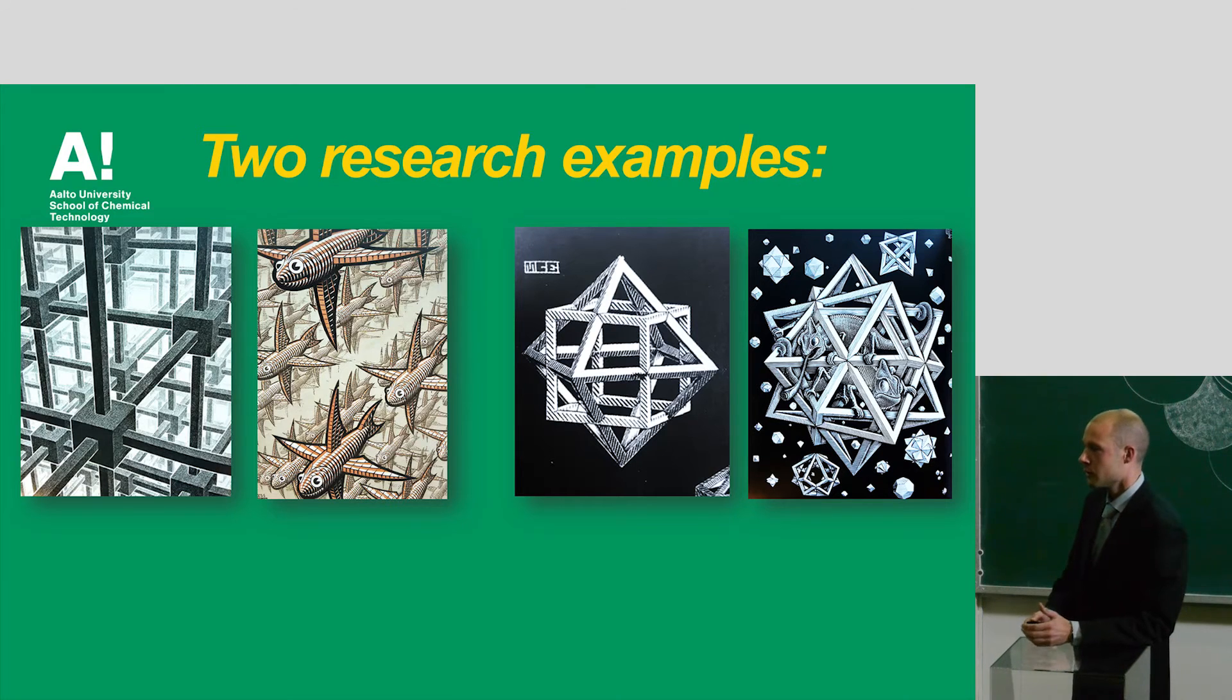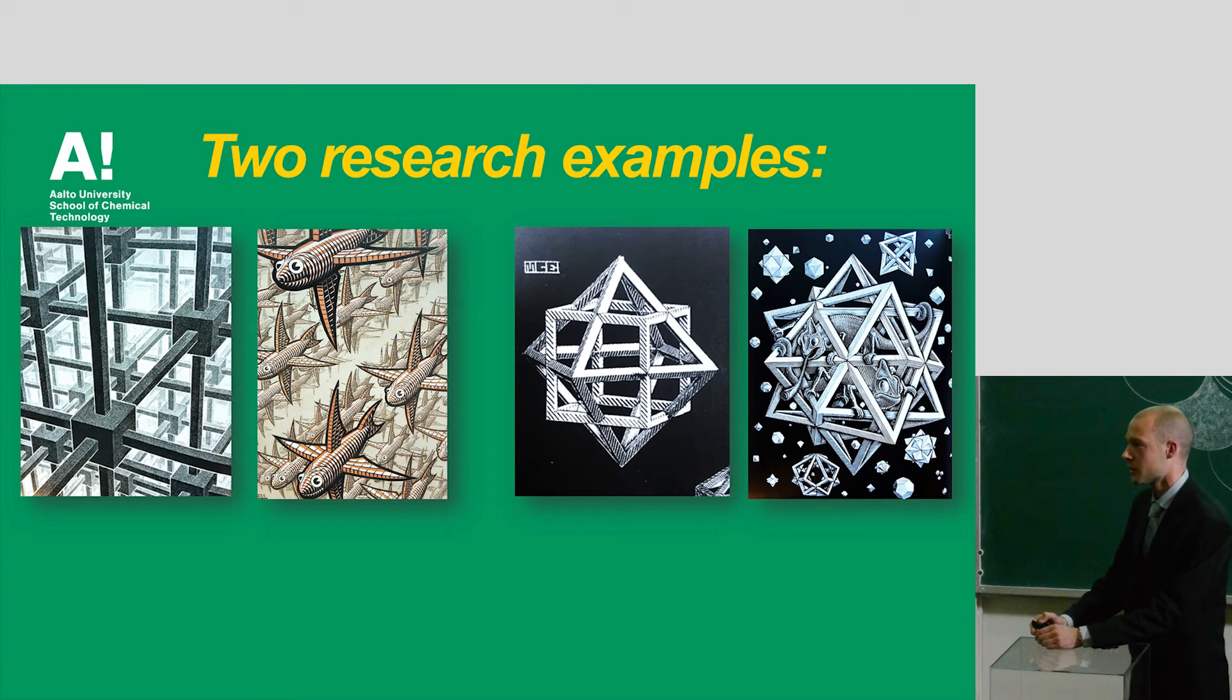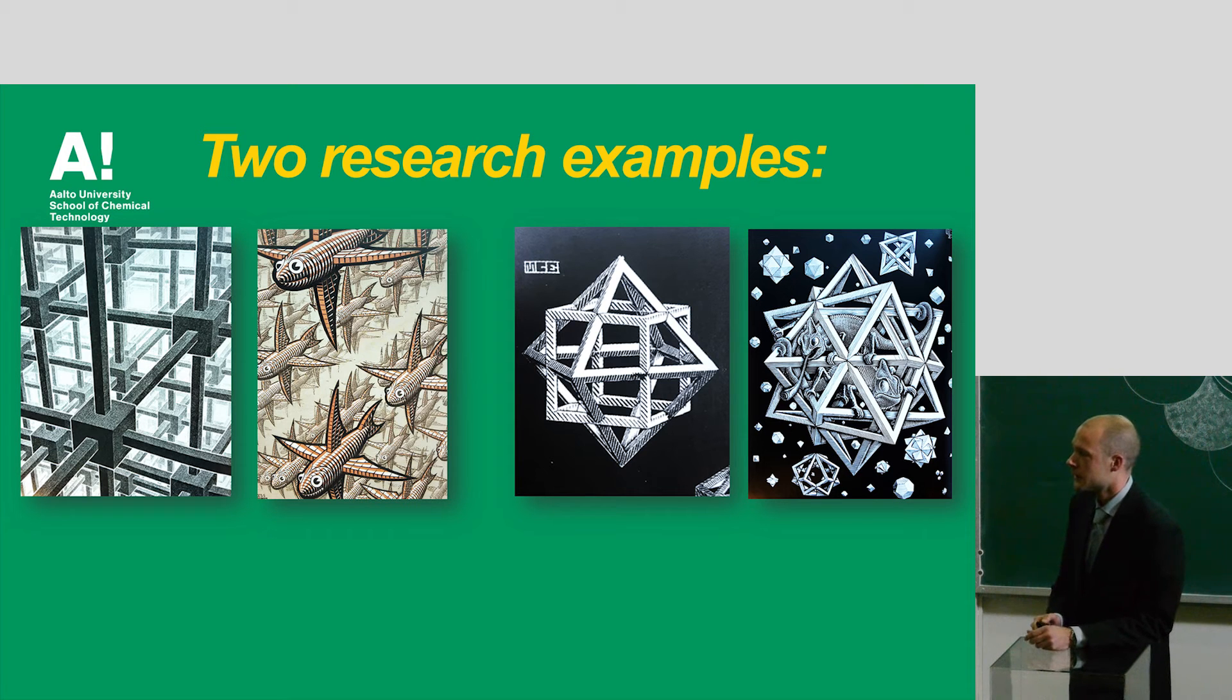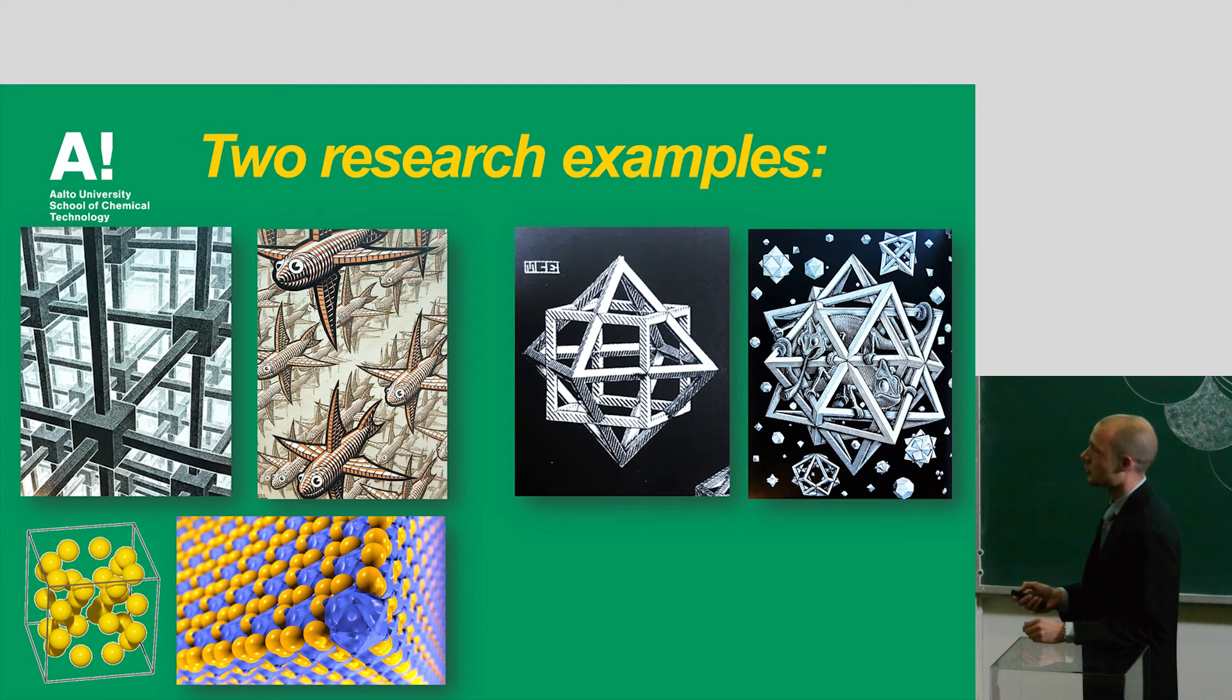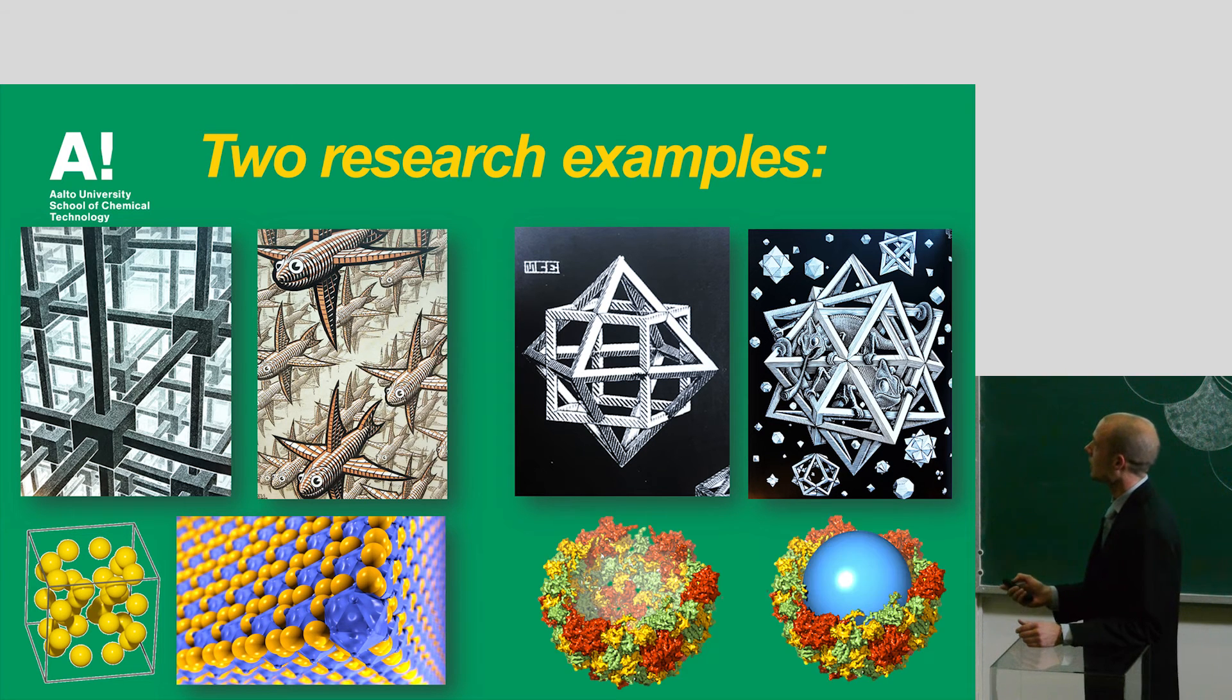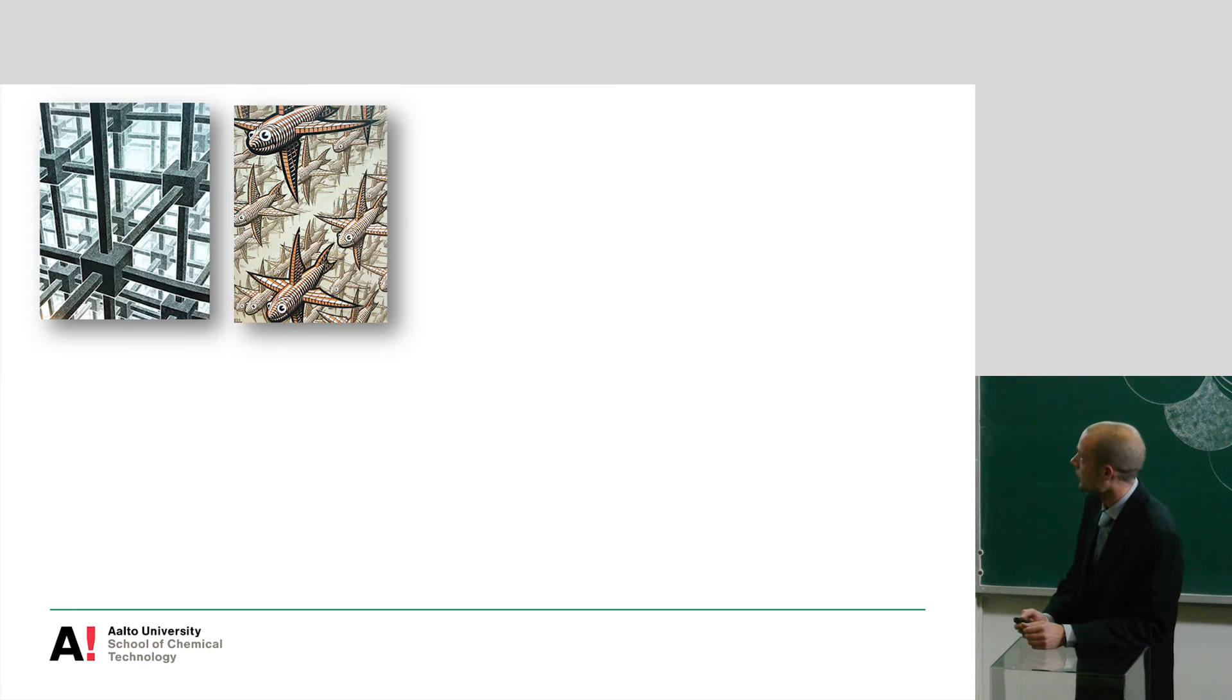So I would like to give you two research examples that we have been working on recently. And these are illustrated again with the works of MC Escher. The first one is how to make crystalline materials out of synthetic components and biological components. And then the other one is to take a cage-like structure, again a virus structure in this case, and how to fill it with a given component.